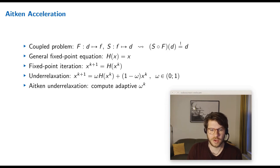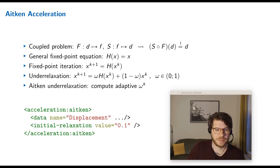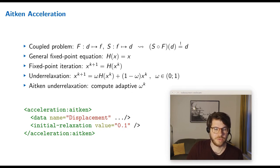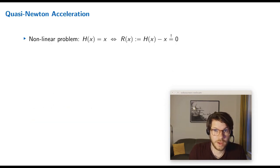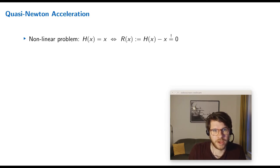In the config, Aitken under-relaxation looks very simple. We define the acceleration type, specify what data we accelerate (the x in this example are the displacements), and provide the relaxation value omega for the first iteration. From the second iteration on, omega is computed adaptively.